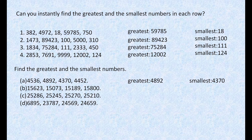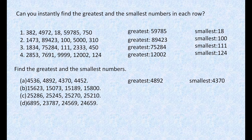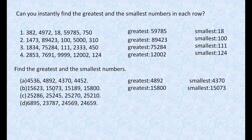Then we move to the next example: 15,623, 15,073, 15,189, and 15,800. We compare the places again. The highest place is 10,000 — all have 1. The 1,000s place also has the same number, 5, everywhere. Comparing the 100s place: 6, 0, 1, and 8. Since 8 is the biggest, the greatest number is 15,800. And since 0 is the smallest, the smallest number is 15,073.